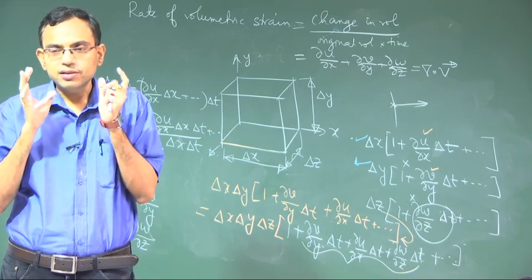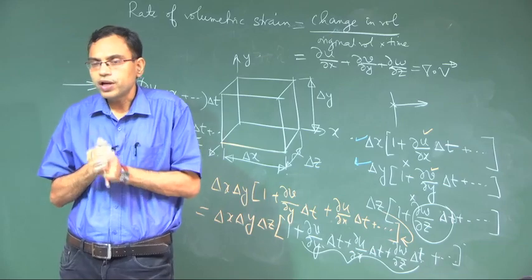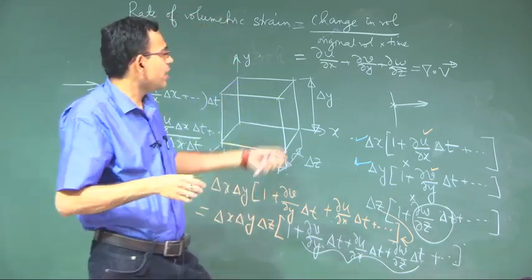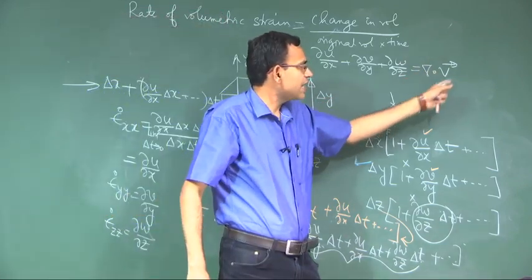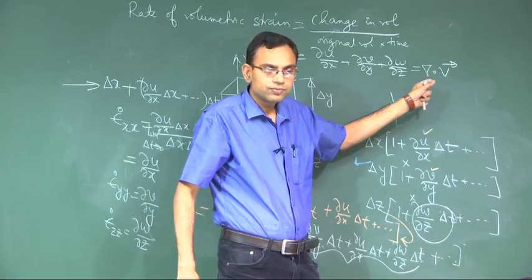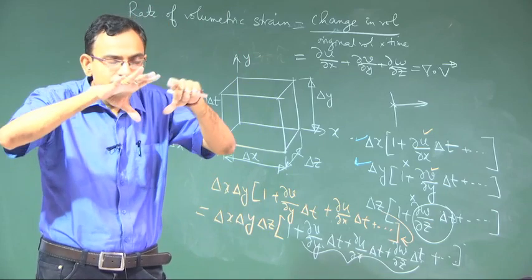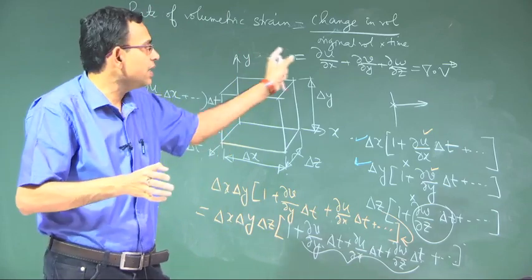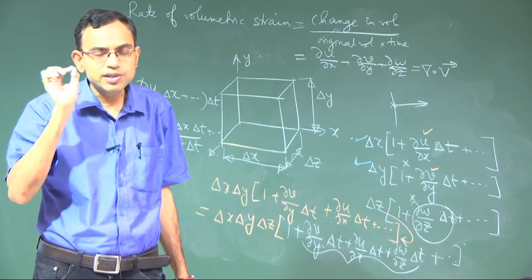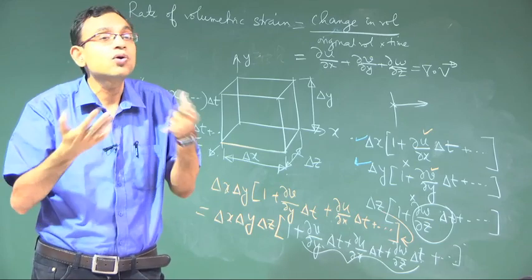One important point: it has become a tradition to present this equation as a consequence of conservation of mass or continuity for incompressible flow. But now we can see that without referring to conservation of mass — purely from kinematic constraints of volume — we can derive this expression. So divergence of velocity equal to zero does not necessarily follow from conservation of mass, but can follow from pure kinematic constraints.